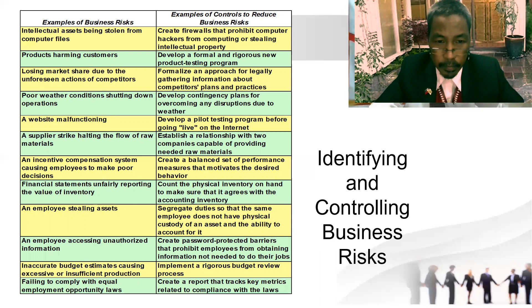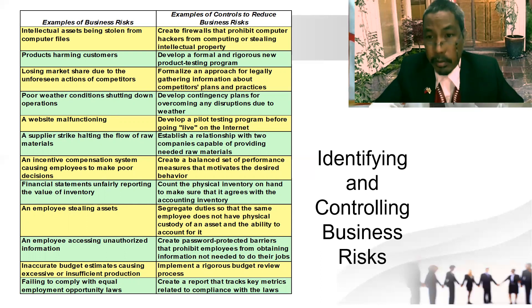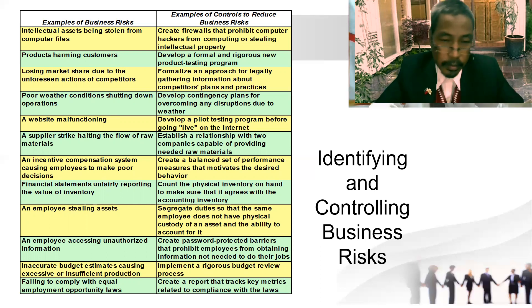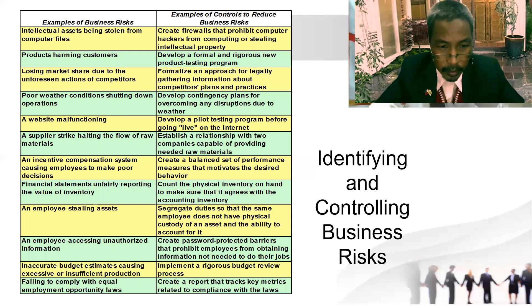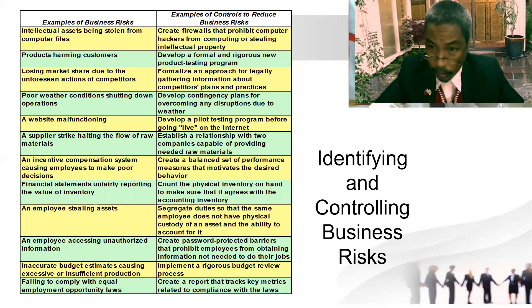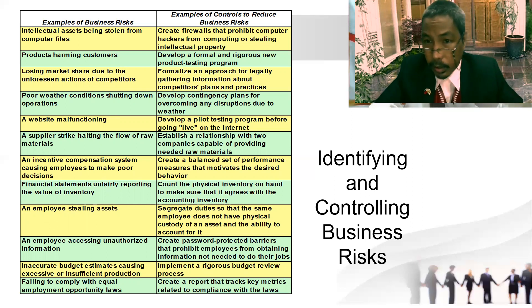Number nine — an employee stealing assets. Segregate duties so that the same employee does not have both physical custody of the asset and the ability to account for it — one person for the physical, a different person for the recording. Number ten — an employee accessing unauthorized information. Create password-protected barriers that prohibit employees from obtaining information not needed to do their job.